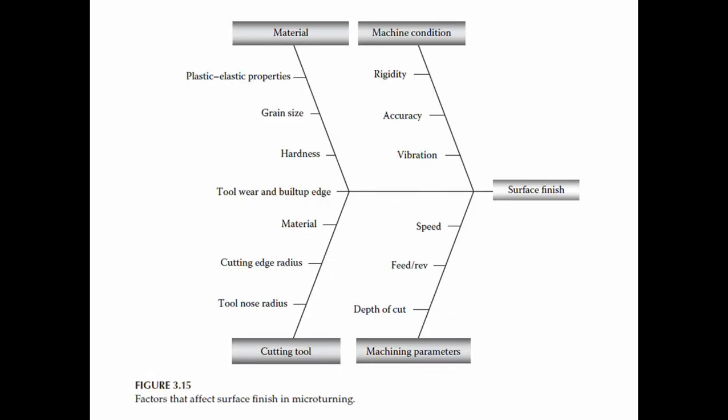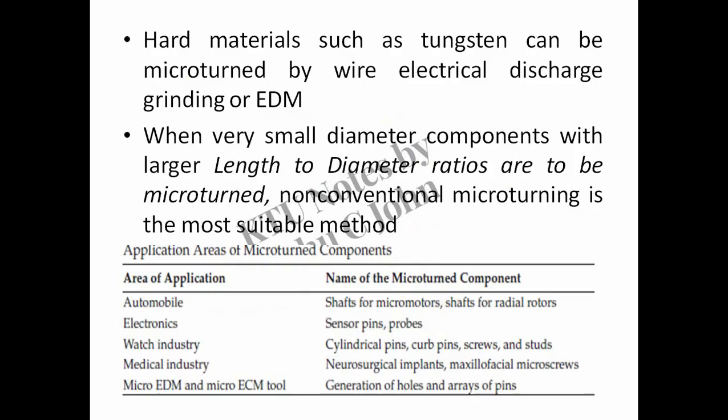Some of the important factors that affect the surface finish value in micro turning include machine tool condition, work material properties, tool geometry, and cutting parameters. Being an ultra precision machining process, micro turning is capable of generating high levels of surface finish on components. Hard materials such as tungsten can be micro turned by wire electrical discharge grinding or EDM. When very small diameter components with larger length to diameter ratios are to be micro turned, non-conventional micro turning is the most suitable method.